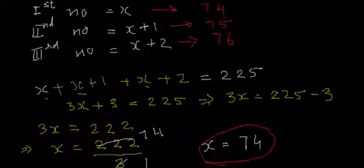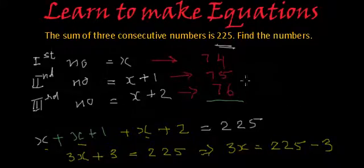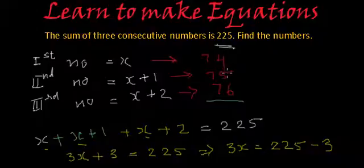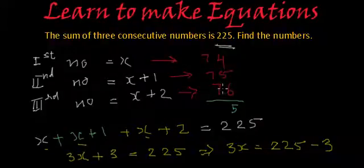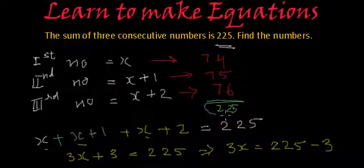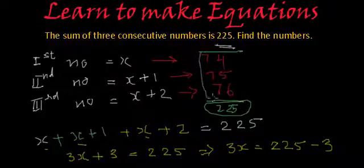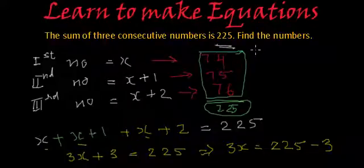And now if you want, you can add these three numbers and check if their sum is coming as 225 or not. So if we add these three: 4 plus 5 is 9, 9 plus 6 is 15, 1 carried forward. 3 sevens is 21 plus 1 is 22. So their sum is coming as 225. So these are the three numbers which are consecutive. The gap between them is 1 and their sum is 225.